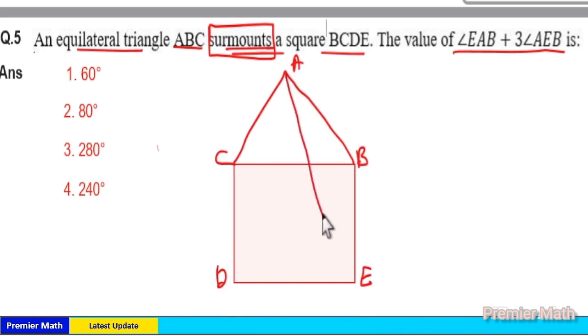Connect A to E. This is angle EAB, and this is angle AEB. These three sides are equal in the equilateral triangle, and all four sides are equal in the square, which means these two sides are equal.